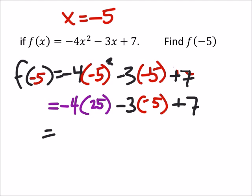So I've got negative 4 times 25, which is negative 100. Negative 3 times negative 5 is a negative 15.